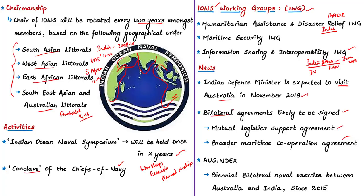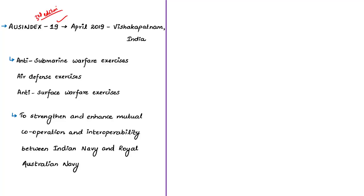In this news article, the Indian Ocean Naval Symposium was mentioned, and we discussed it in detail. Now let us see in brief about AusIndex. AusIndex is a biennial bilateral naval exercise between Australia and India — biennial means once every two years. AusIndex started in the year 2015, and this is the third edition, AusIndex 19. AusIndex 19 was held in April 2019 between the Indian Navy and Royal Australian Navy in Visakhapatnam in Andhra Pradesh. The main aim is to strengthen mutual cooperation and interoperability between the two navies.